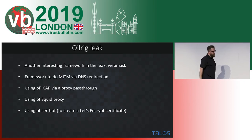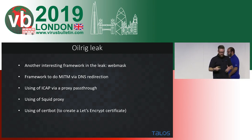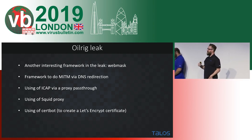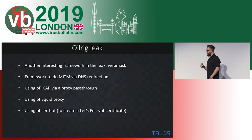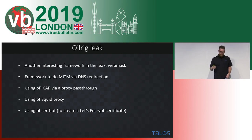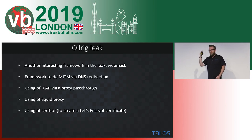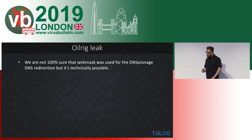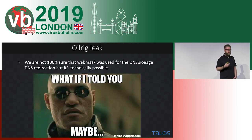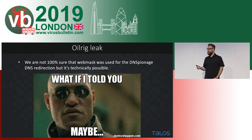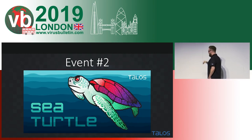There was also a framework called Webmask in the oil rig leak. Webmask performs man-in-the-middle DNS redirection — exactly what DNS Espionage and Kharkov were used for. It also uses ICAP for proxy pass-through, Squid proxy, Python scripts, and certbot to create Let's Encrypt certificates automatically. All of this starts to link up. We can't 100% say Webmask was used for DNS Espionage, but it's very technically possible. We'd say we're moderately confident that it is.